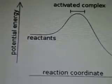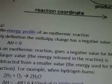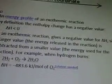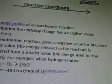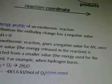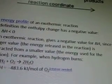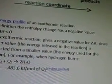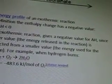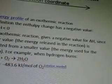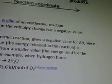Here is a graph showing you how that works — an energy profile of an exothermic reaction. By definition, the enthalpy change has a negative value of H less than zero. An exothermic reaction gives a negative value of H since a larger value, the energy released in the reaction, is subtracted from a smaller value, the energy used for the reaction.